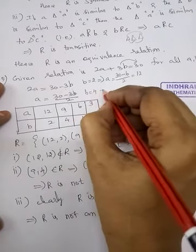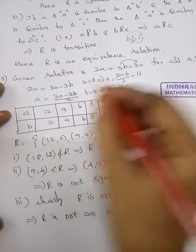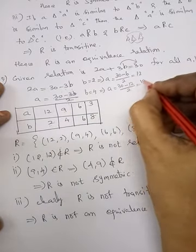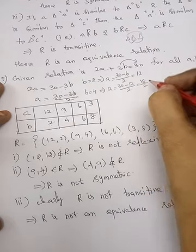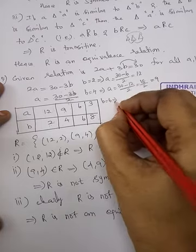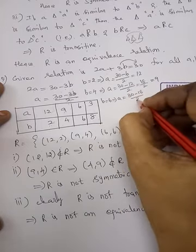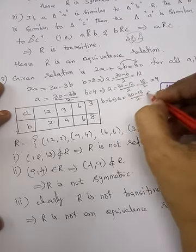B equal to 4. A equal to 30 minus 3 into 4 is 12, 18 by 2. That is 9.